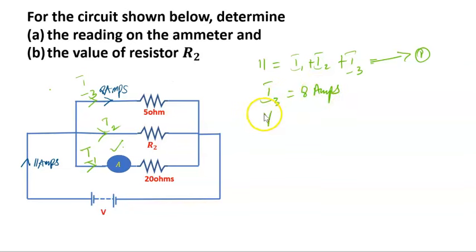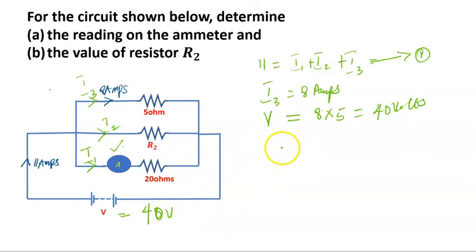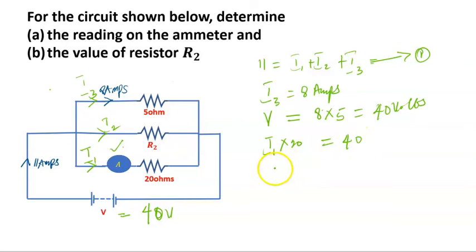From the circuit we know that I3 equals 8 amps. Since the voltage across each resistor is the same, that voltage can be found from I3 times its resistance: 8 amps times 5 ohms equals 40 volts. So the voltage V across all resistors is 40 volts. Now I can determine the ammeter reading: I1 times 20 ohms equals 40 volts, so I1 equals 40 over 20, which equals 2 amps.